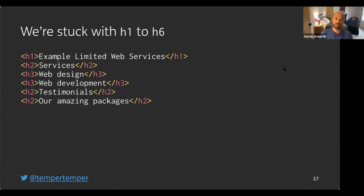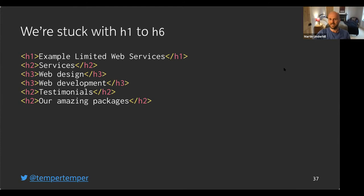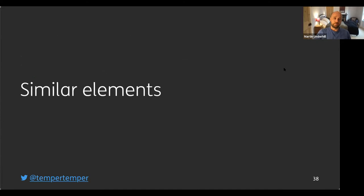The good thing is it's nicely backwardly compatible. In the example, we have an h1, three h2s for services, testimonials, and packages, and then h3s for web design and web development nested inside services. In a way, the HTML5 document outline wasn't really progressively enhanceable, and it was breaking things for screen reader users and older browser users. So the HTML idea of always being backwardly compatible was being violated.